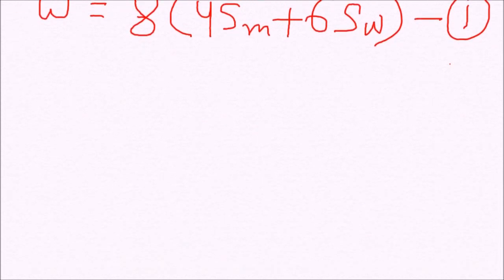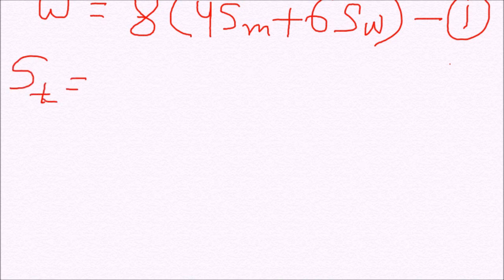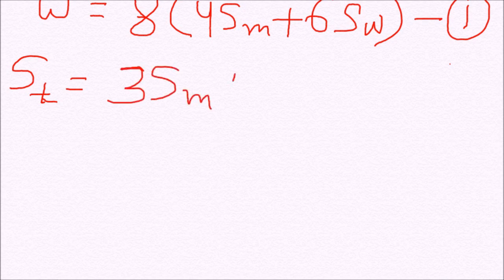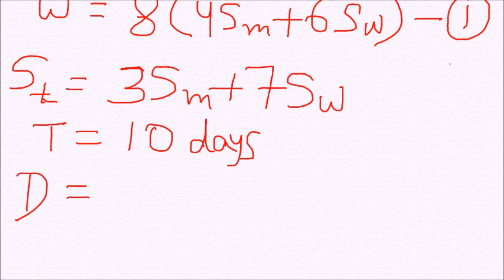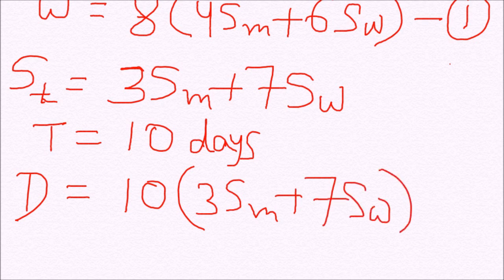So in this case our total speed becomes 3 times SM plus 7 times SW, and the time is 10 days which makes the distance of work equal to 10 into 3 times SM plus 7 times SW. Let us say this is equation 2.